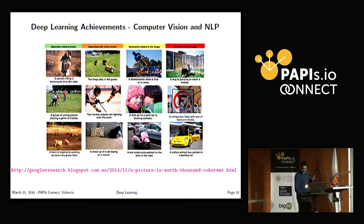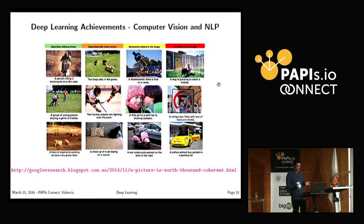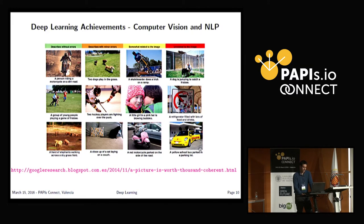There are some funny examples here. For instance, one picture says it's a dog jumping to catch a Frisbee — okay, the dog is not jumping. But this one is very nice: a fridge filled with a lot of food and drinks. And the system thinks there's a yellow school bus parked in a parking lot. But you can check the other good results and it's quite impressive.